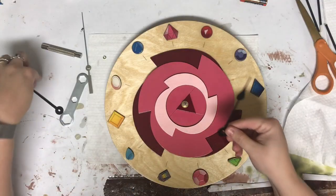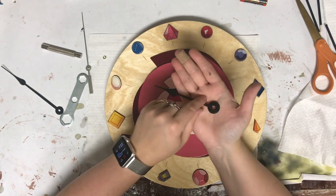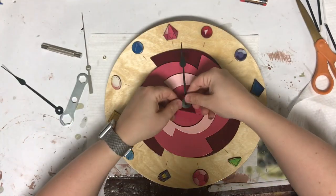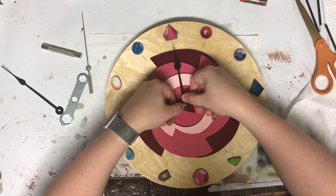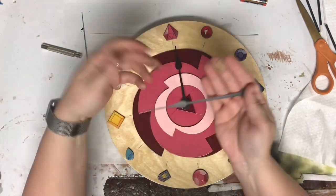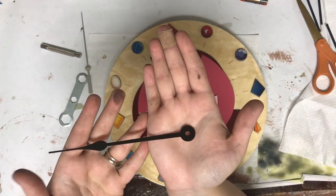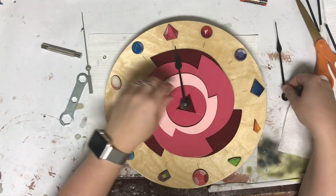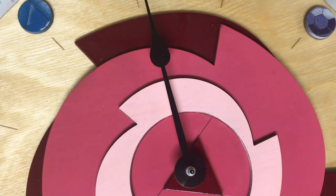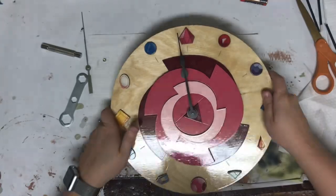Time for the hands! First part you put on is the hour hand. It's the largest hole and it just presses down into place. The minute hand has a long narrow hole. If you look closely at the end of the shaft you can see the part that it slides over is also long and narrow and make sure you line it up properly.